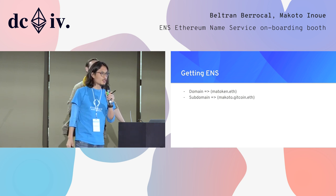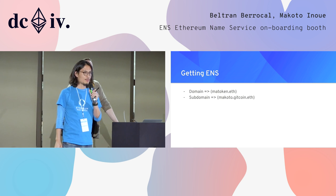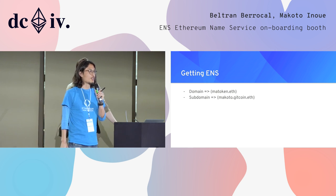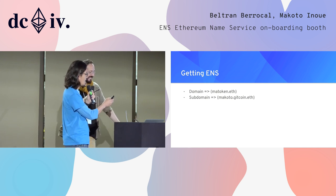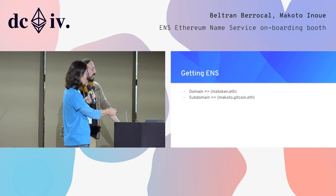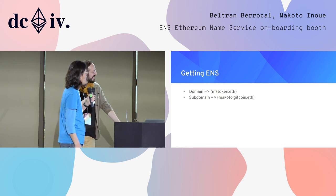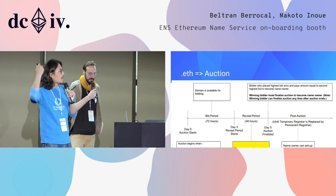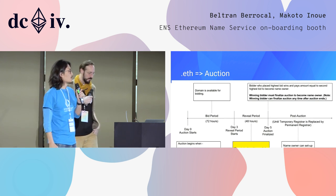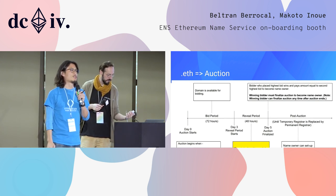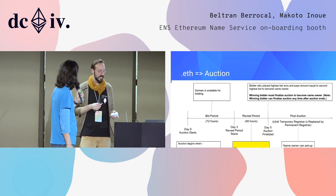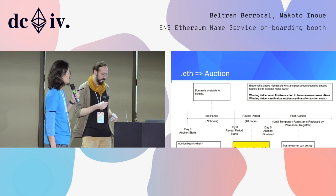Who does not have a GitHub account? Everybody should be able to get that kind of stuff. So that domain for the .eth address — Nick already mentioned the state of it. It's a seven-day auction process.